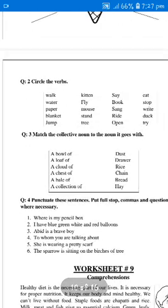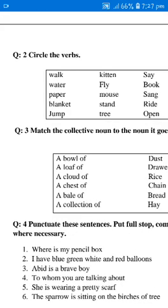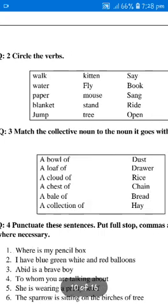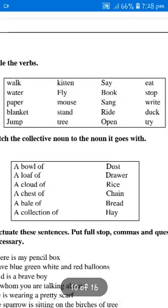Question number 2: Circle the verb. You can find the verbs from these words and circle them: walk, water, paper, blanket, jump, kitten, fly, mouse, stand, tree, say, book, sang, ride, open, eat, stop, ride, duck, try.